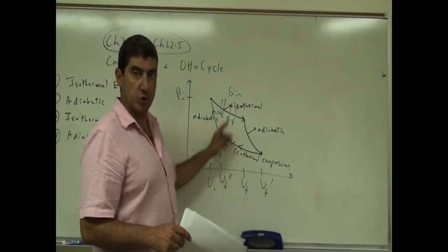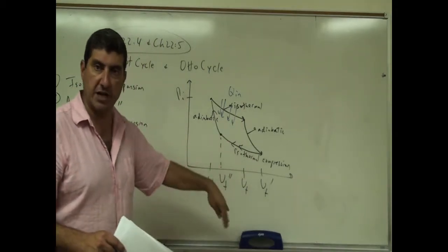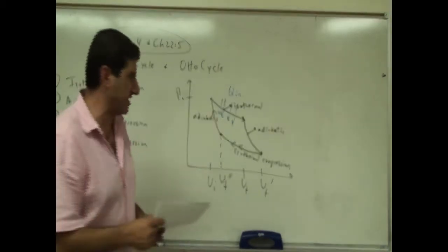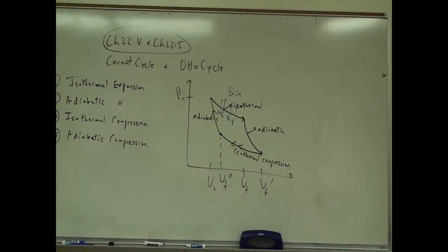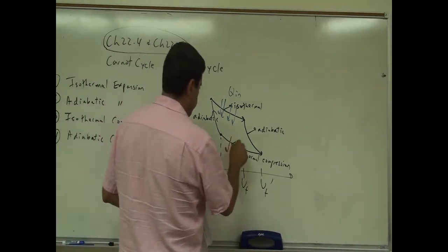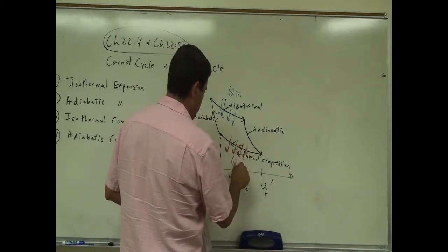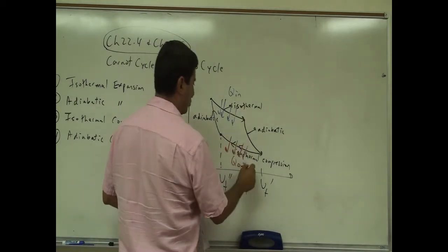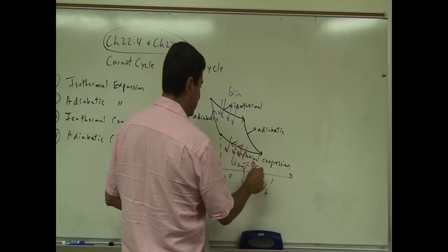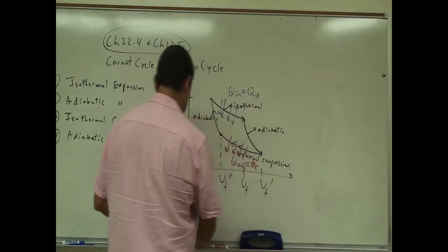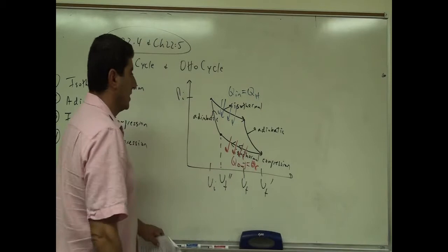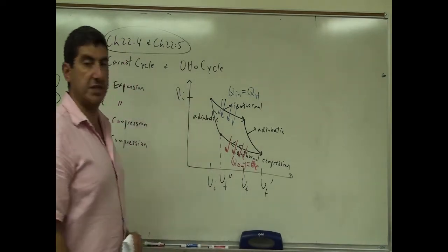Over here you're dumping the heat — Q cold, Q out. We can also call this Q_C, and then the heat coming in we can call Q hot. Then in the next adiabatic stage, no heat is coming in.